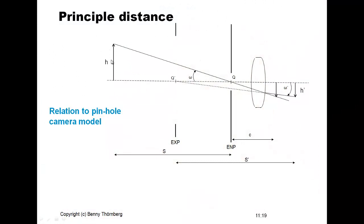The ray diagram shows an object of height H projected through this Gaussian lens, giving a projection H' on the focal plane. The aperture stop has a virtual projection at the entry cone of light, causing a projection center Q and an entry pupil. There is a corresponding exit cone defined by the exit pupil at projection center Q'. The principal ray passes through both these projection centers.